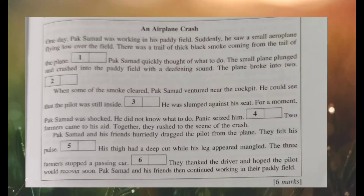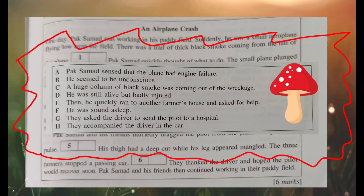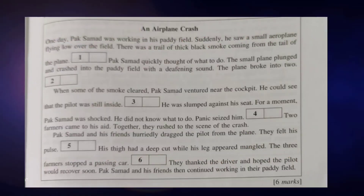Let's continue with the next paragraph. Pak Saman and his friends hurriedly dragged the pilot from the plane. They felt his pulse — they tried to see whether he was still alive or not. The correct answer for number five is D: he was still alive but badly injured.